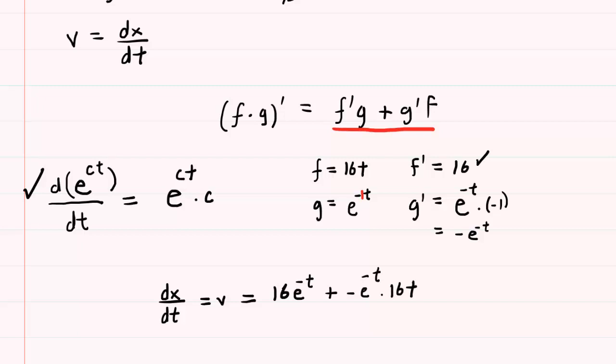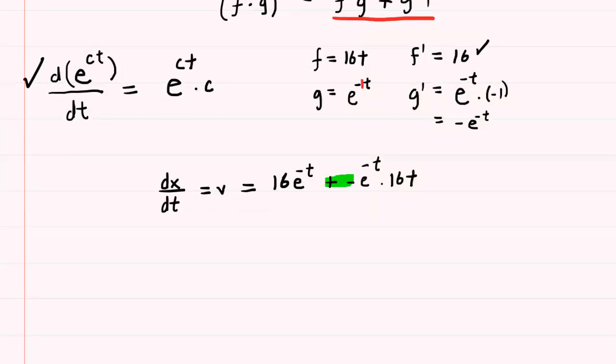Let's clean this up just a little bit. We have the addition of a negative quantity, so that is the same thing as subtraction. We can rewrite this as 16e to the negative t minus 16t times e to the negative t. So this would be our velocity function.